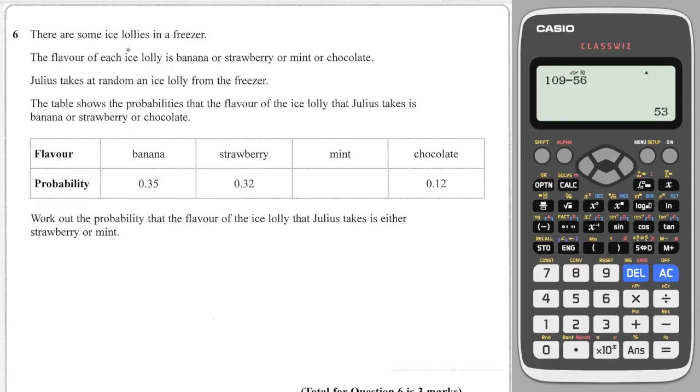Okay, we have some ice lollies in a freezer. The flavour of each ice lolly is banana, strawberry, mint or chocolate. Julius takes one at random from the freezer and here is all the probabilities. Work out the probability that the flavour that he takes is either strawberry or mint.